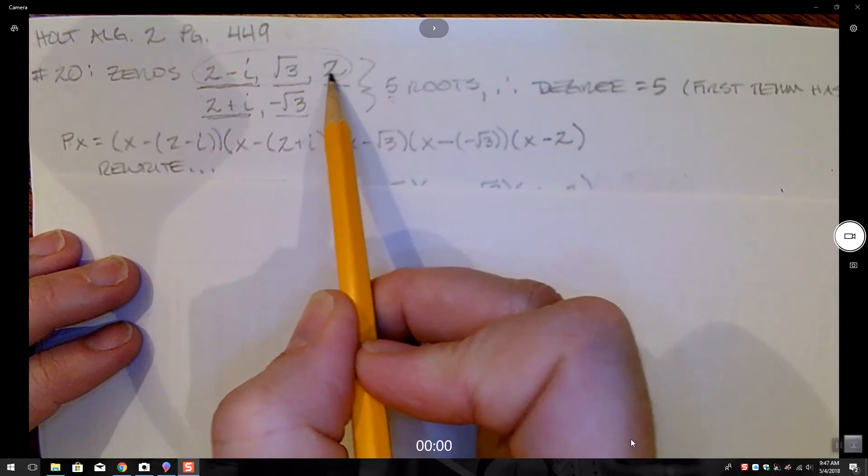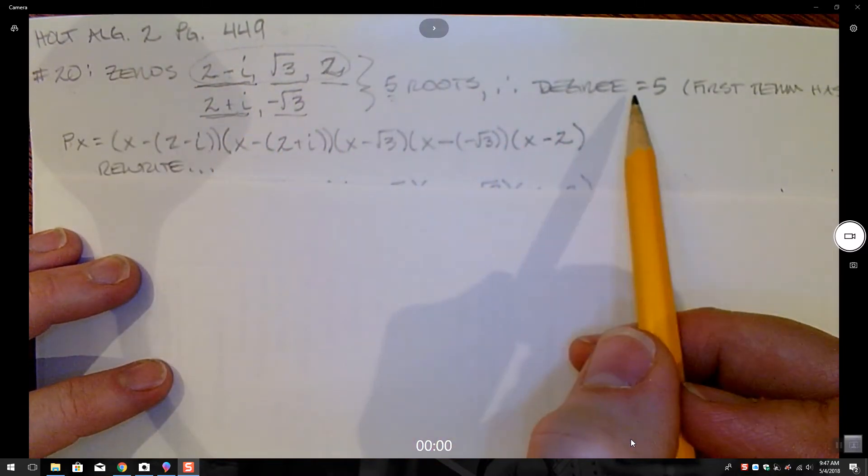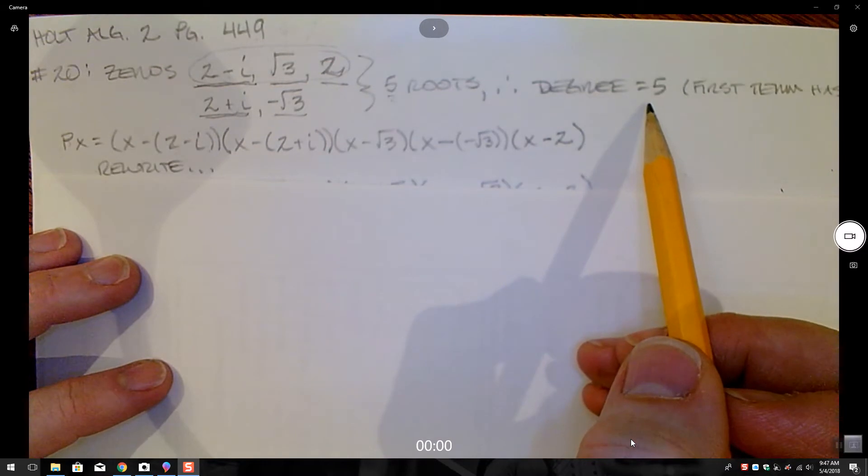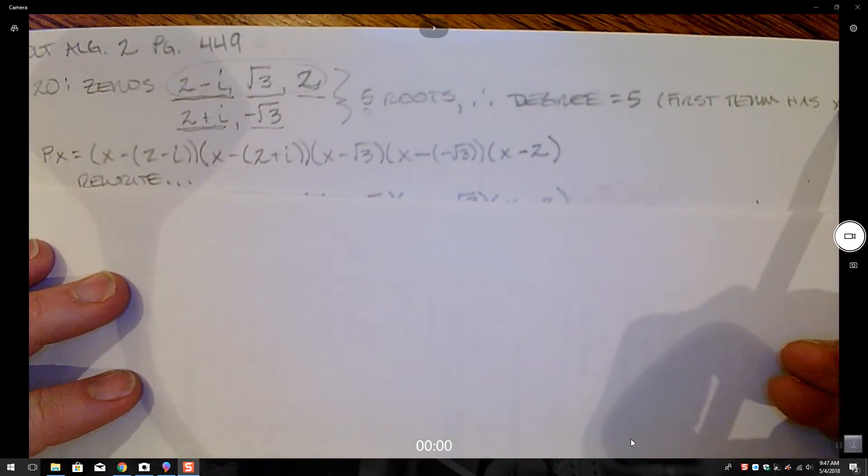And our constant, it's just the constant. So we have 5 roots total, giving us a degree 5 polynomial at the end of the day, which tells us we're going to have a term that has x to the fifth in it.